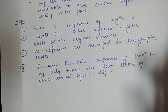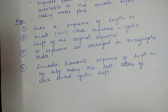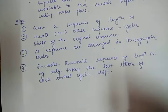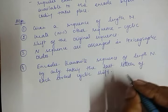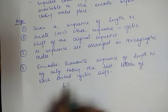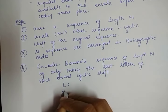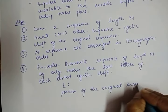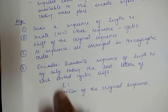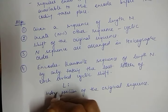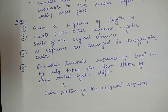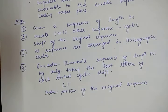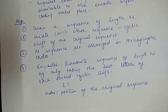The encoder transmits to the decoder side by taking the last letters of each sorted cyclic shift, represented as L — L stands for last letters. Additionally, the encoder also sends the position of the original sequence, which you can represent as an index value. So at the decoder side we have two pieces of information: L and the index value. In my next video I will decode using the BWT technique with L and index value. These are the four steps for solving the BWT technique.